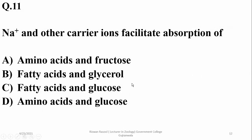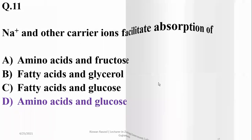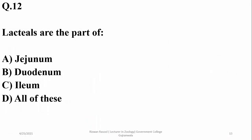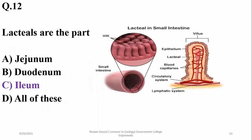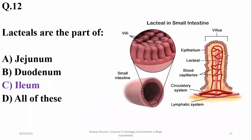Sodium and other carrier ions facilitate absorption of amino acids as well as glucose. Lacteals are the part of the ileum involved in absorption of food — so charlie. A lacteal is a lymph vessel present in the villi.